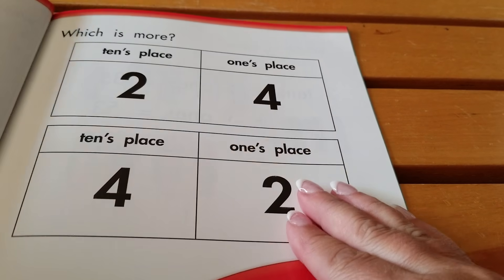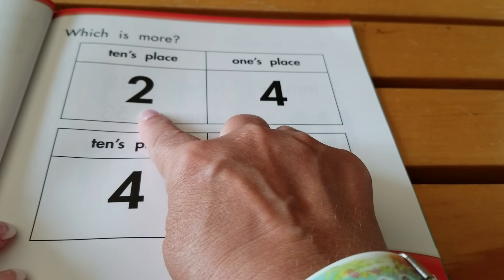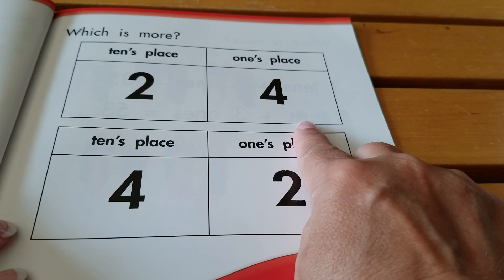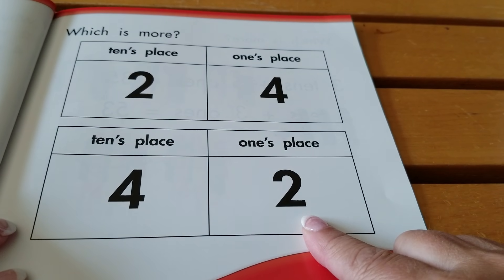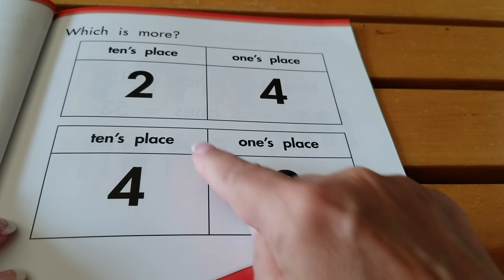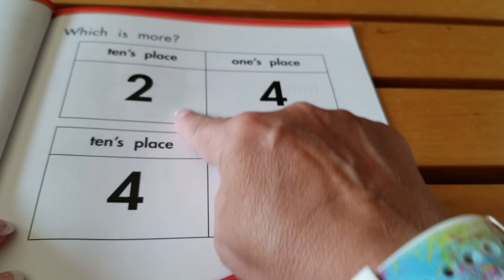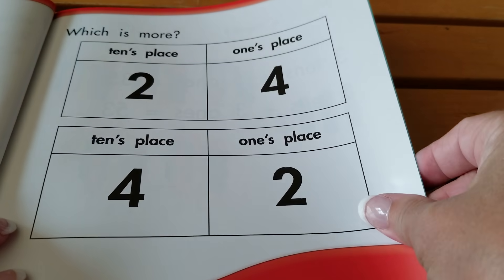Now, I can see which one is more. This one has two in the tens place, four in the ones place. This one has four in the tens place, two in the ones place. I know that the groups of tens are more. So, which group do you think is more?